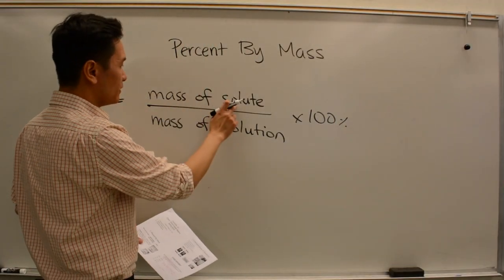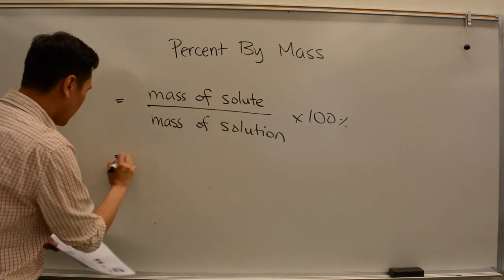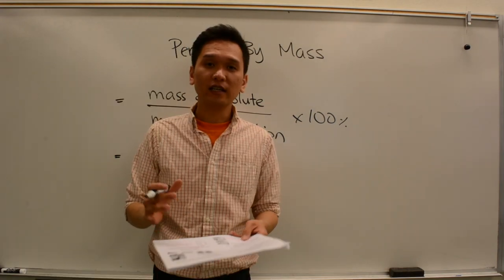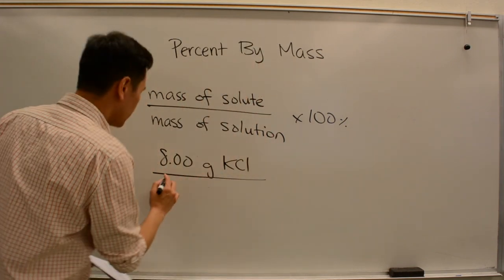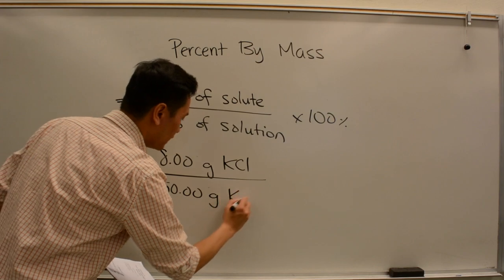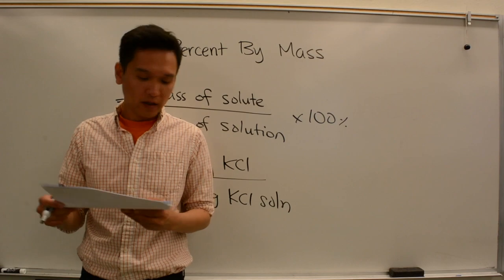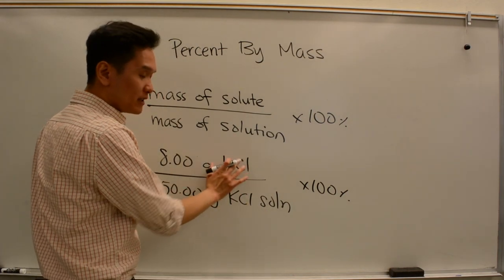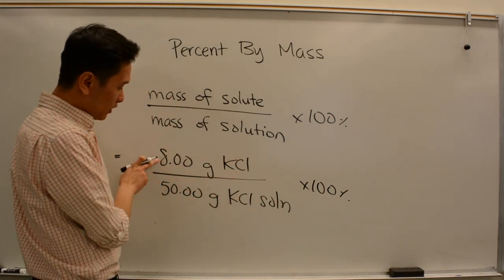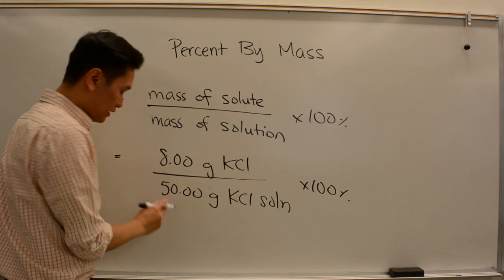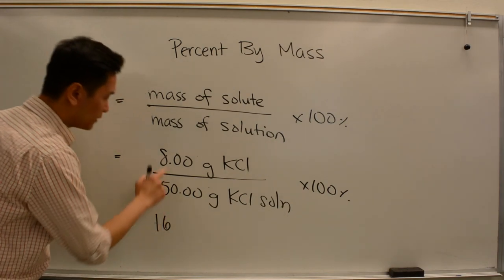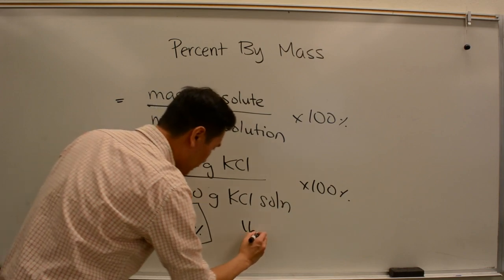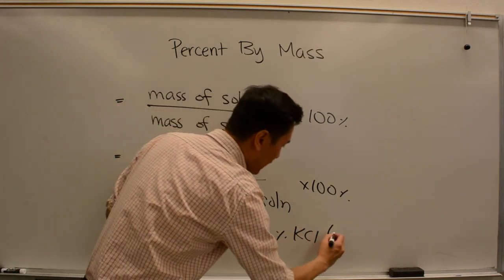We need to know what is the mass of the solute versus the mass of the solution. From the problem, the mass of the solute, which is KCl, is 8.00 grams. We already know that the mass of the solution is 50 grams. So we divide 8 grams by 50 grams of KCl solution and multiply by 100. Because it's a percentage — a ratio — the units cancel out. 8 divided by 50 gives us 16.0, times 100 is 16.0% KCl, mass over mass.